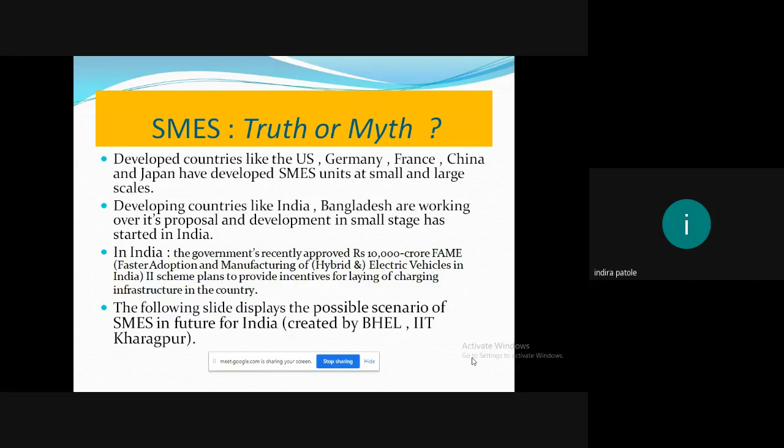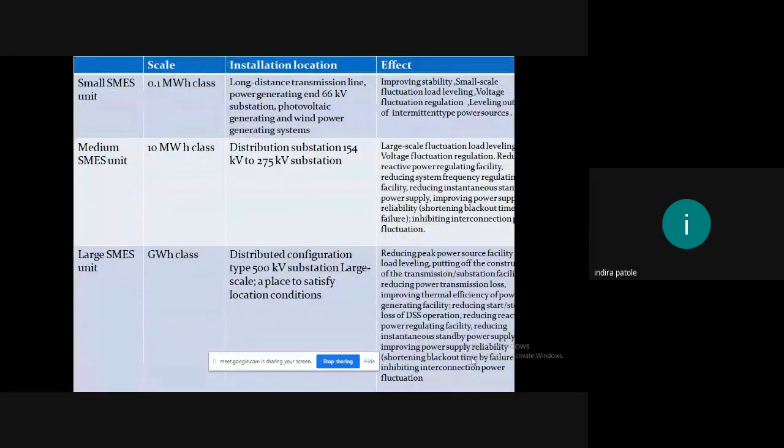And, so, in India, the government has made it quite clear that it wants India to be a major market for EVs, as you all know. So, in future, however, we are very far behind in terms of creating proper charging infrastructure for electric vehicles. Keeping this in mind, the government has recently approved 10,000 crore rupees of budget for FAME. Now, what is FAME? FAME is a scheme, faster adoption and manufacturing of hybrid and electric vehicles in India. So, the following slide conveys a table to you all, which is a possible scenario for SMES in future in India. So, it was created by BHEL, that is BEL, and IIT Kharagpur. Please go through this table as it is quite big. It wouldn't be of much help if I read it to you all right now. But, please go through it, you all will understand the classification we went through.